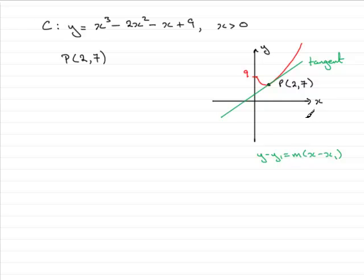Now, m is the gradient of the tangent. We don't know that yet. So what we need to do is to get the gradient at the point where x equals 2 on this curve. And so that requires differentiation. So the first thing we need to do is to find dy/dx, differentiate y with respect to x.